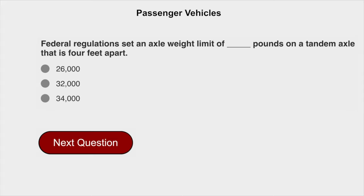Federal regulations set an axle weight limit of 34,000 pounds on a tandem axle that is 4 feet apart.